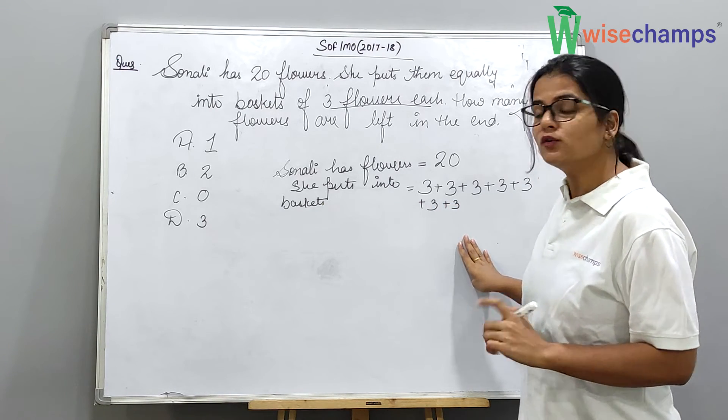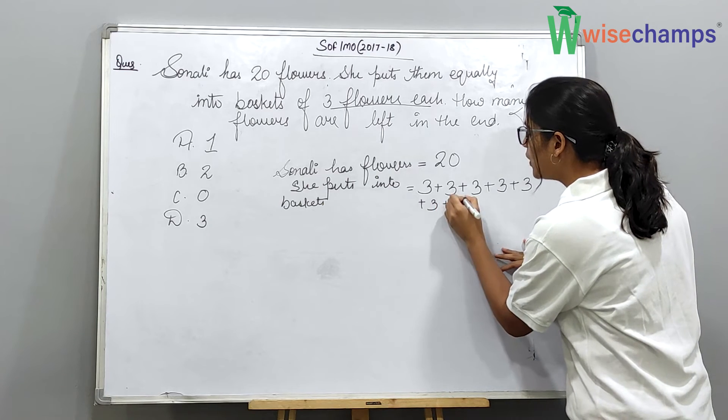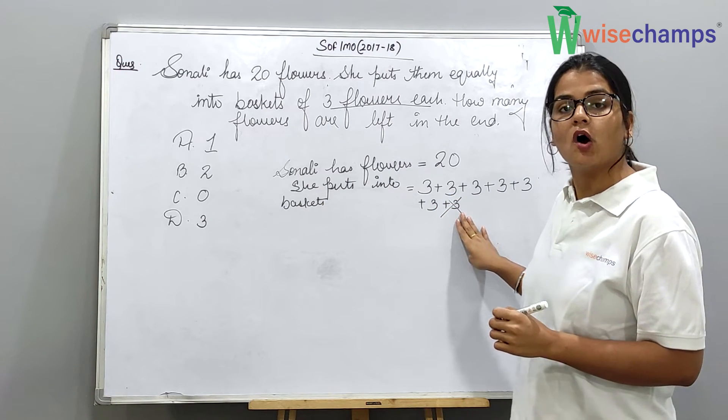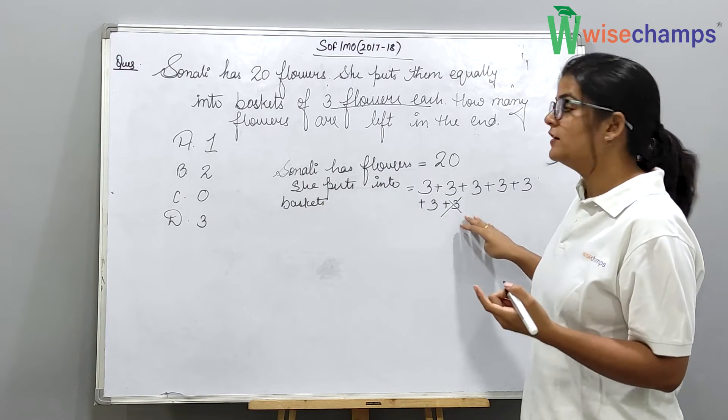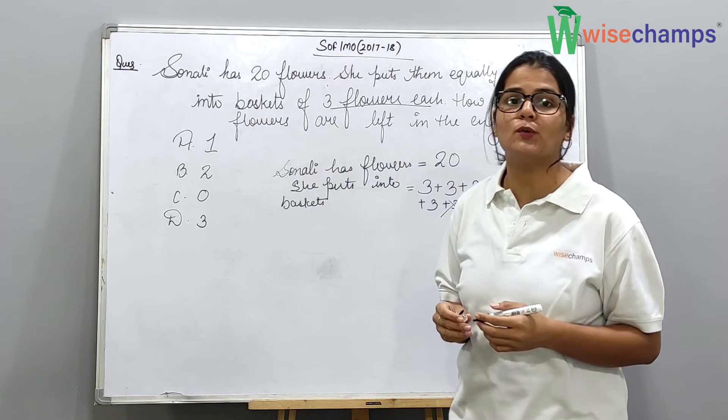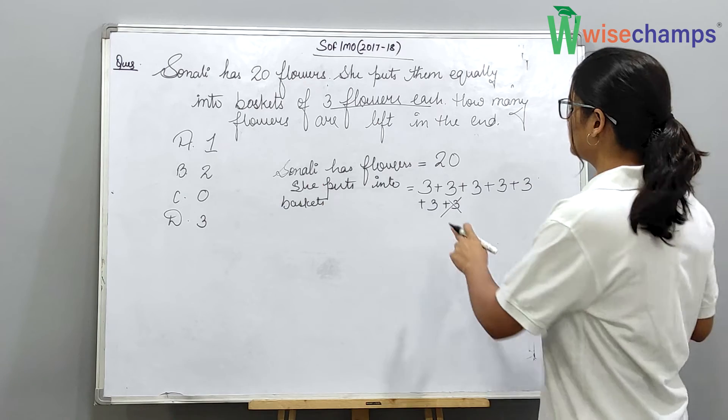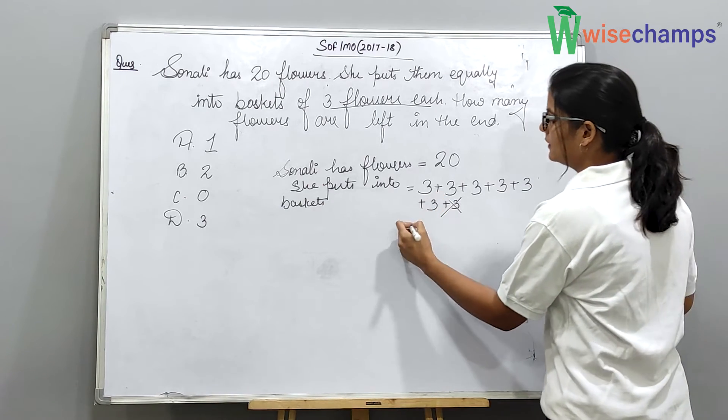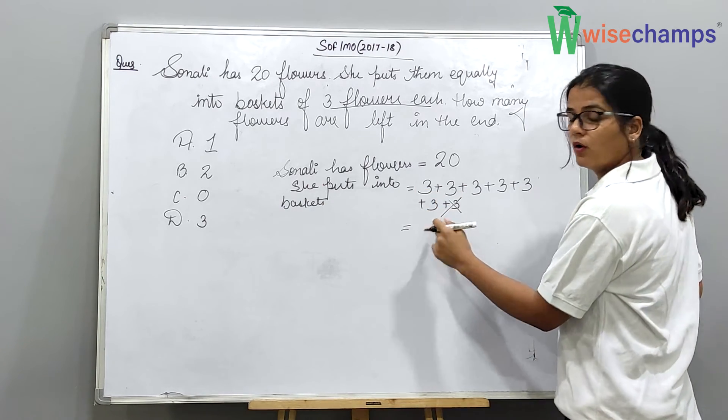So what will we do? We will not count this 3 because after adding 3, we will get 21. But here, Sonali has only 20 flowers.